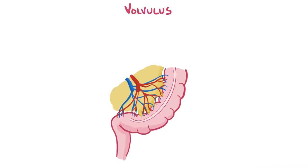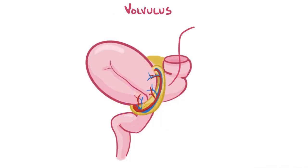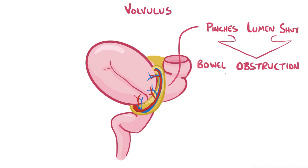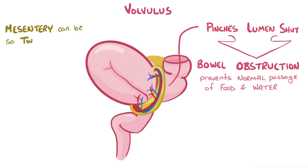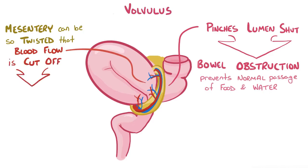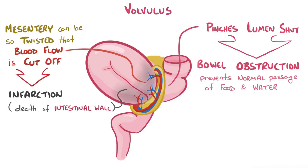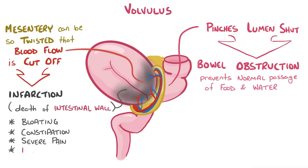In any type of volvulus, a portion of the intestines becomes twisted and it pinches the lumen shut, resulting in bowel obstruction, which prevents the normal passage of digested food and water. Sometimes the mesentery can get so tightly twisted that blood flow to that part of the intestine is cut off, which leads to infarction, or death of the intestinal wall. This can cause symptoms ranging from mild bloating and constipation to severe pain and bloody stools.